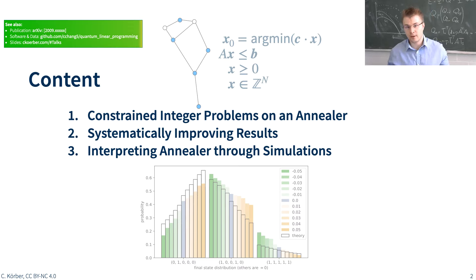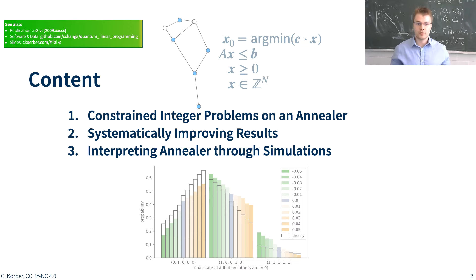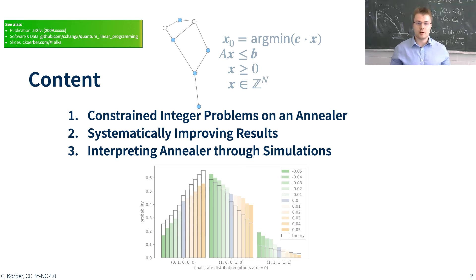As such, this talk is divided into three parts. The first mathematical part addresses how to solve constraint integer problems on an annealer. The second experimental part analyzes how you can tweak parameters to improve solutions. And the third physics-inspired part displays simulations of the annealing hardware aimed at identifying concepts which affect the outcome. So without further ado, let's start.